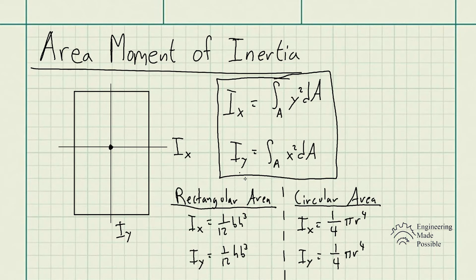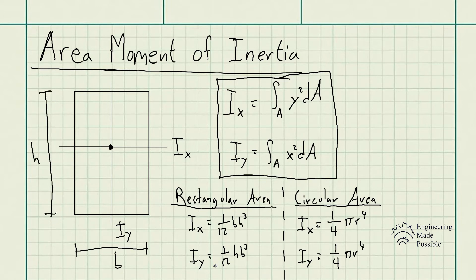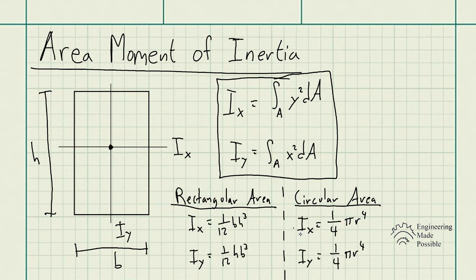For a rectangular area, the area moment of inertia about the x-axis is (1/12) × base × height³, and about the y-axis is (1/12) × height × base³. The units will be to the fourth power — for example, if the area is in meters, the result is meters to the fourth power. For a circular area, the moment of inertia about the x or y-axis is (1/4) × π × radius to the fourth.